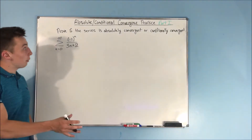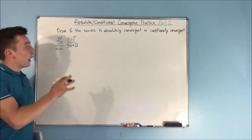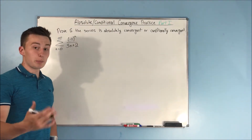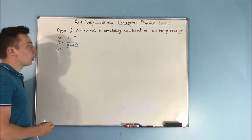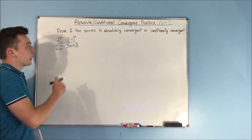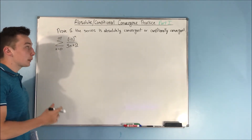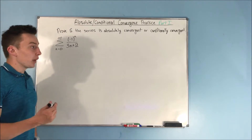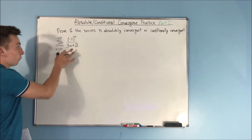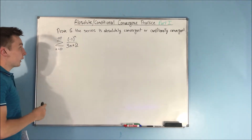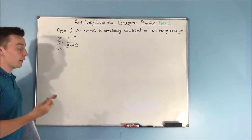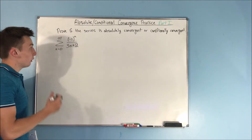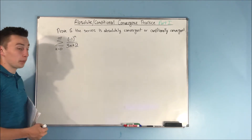This video is going to be part one of our absolute/conditional convergence practice. We want to prove if the series below is absolutely convergent or conditionally convergent. We have the sum from n equals zero to infinity of negative one to the n over three n plus two.